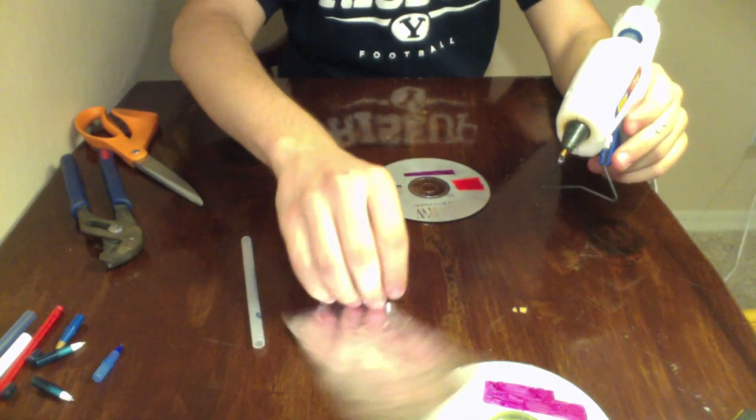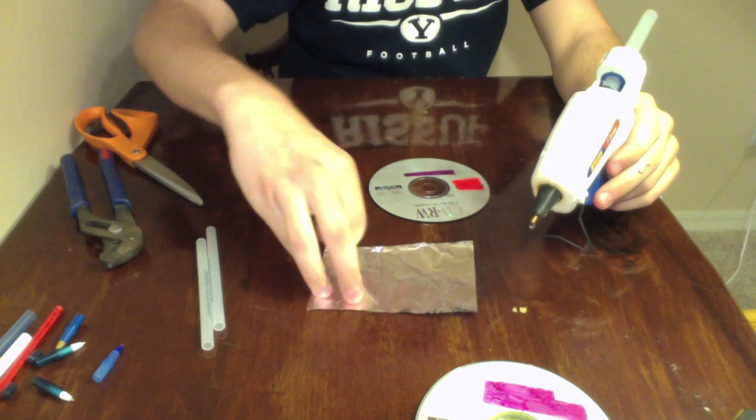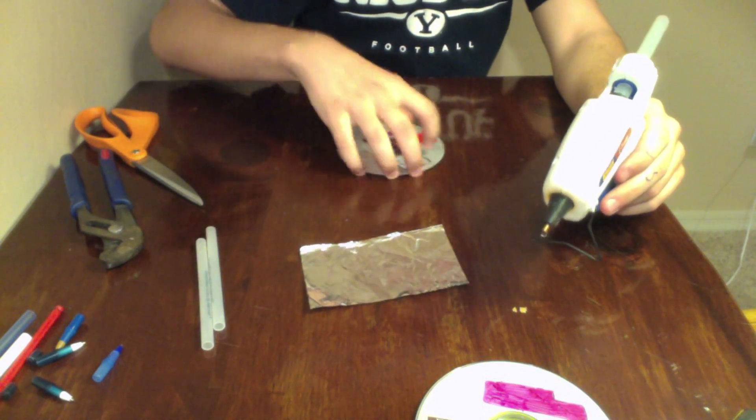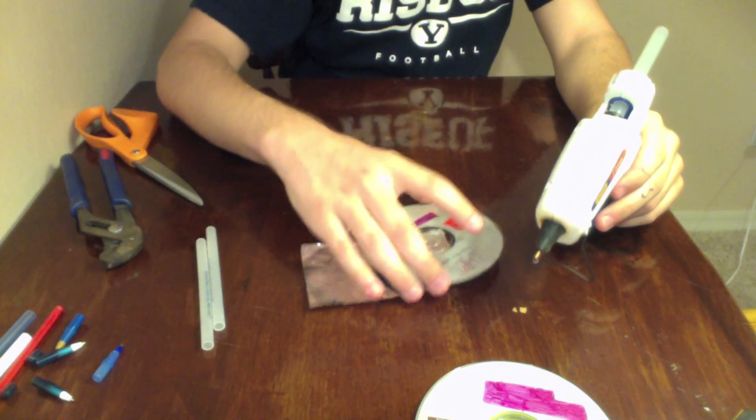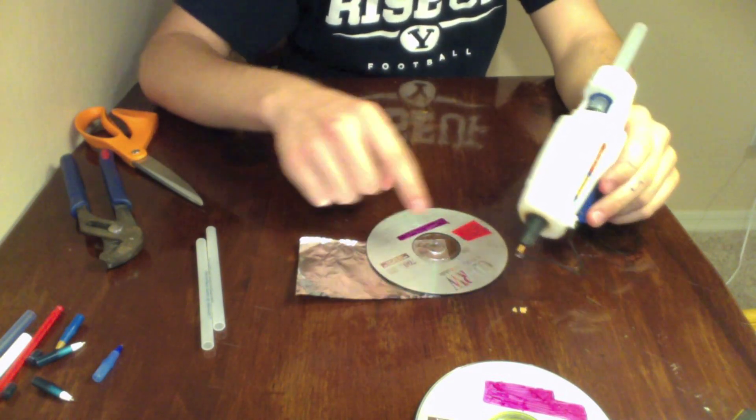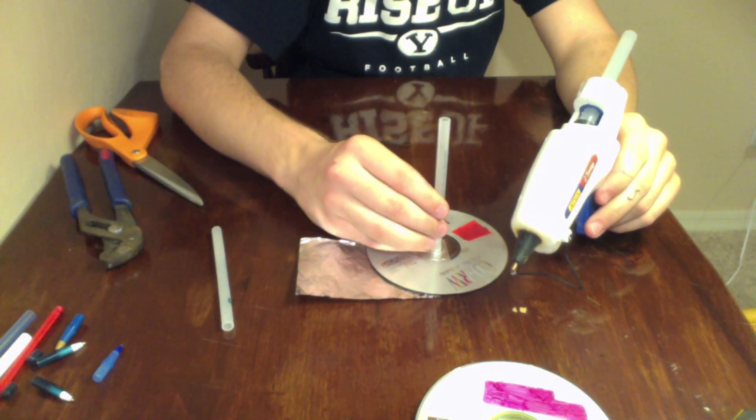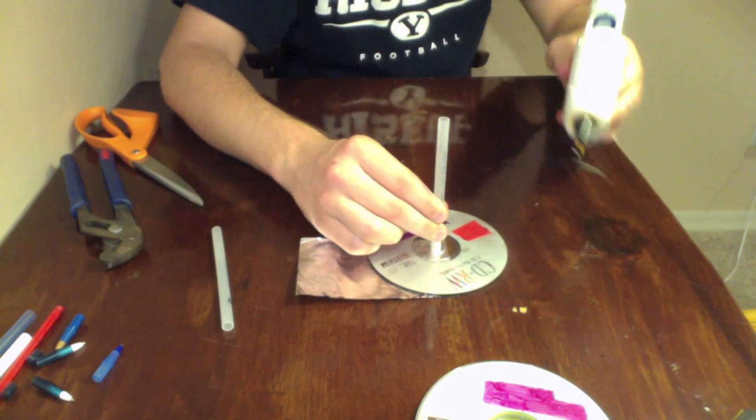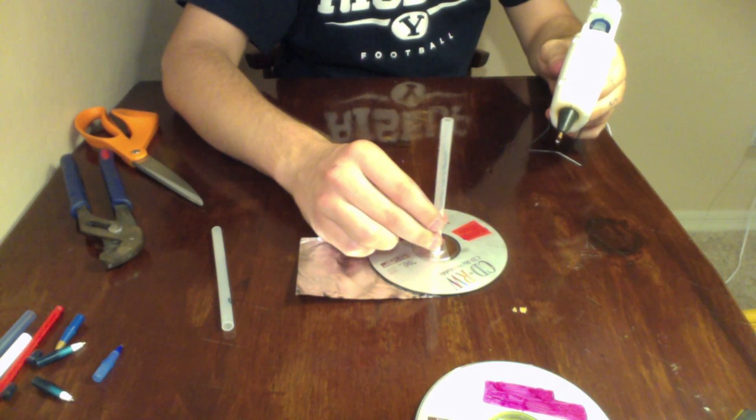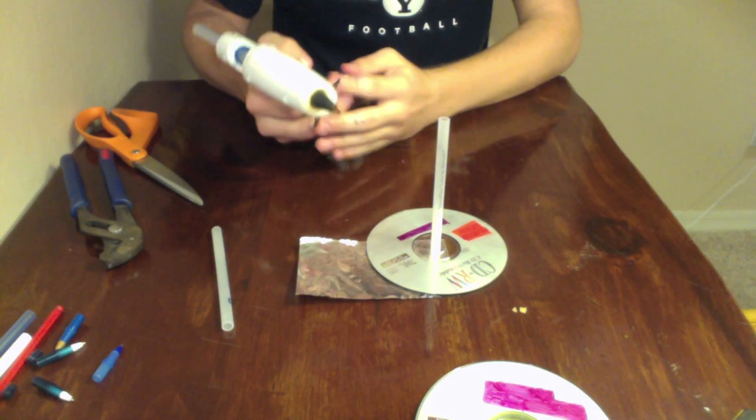Now what you want to do is take your hot glue gun and your tinfoil, and just set the tinfoil down, and place your CD on the tinfoil so the hole in the CD has tinfoil completely on the bottom. You want to take your pen casing and try and align it on the center of your CD as much as you can. It doesn't have to be perfect, but it'll help if it's as centered as possible.